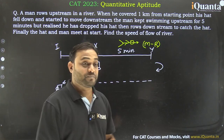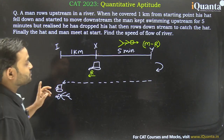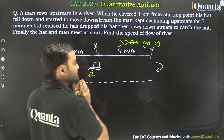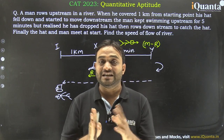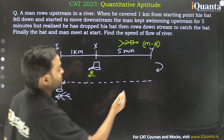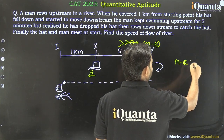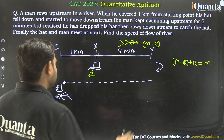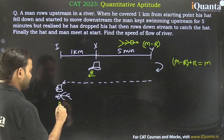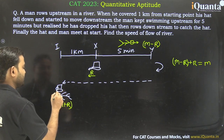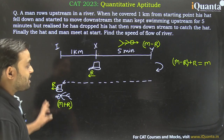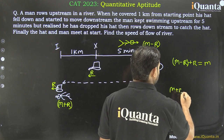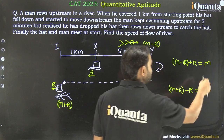Now we need to find the speed of flow of the river. When the two were going in opposite directions, their relative speed is (m minus r) plus r, because when two objects move in opposite directions we add their speeds. So relative speed in the first case equals m minus r plus r, which is equal to m. Now when the man is going downstream, his speed is m plus r, and the speed of the hat is r. Their relative speed, since they are going in the same direction, is the difference: (m plus r) minus r, which is once again m.